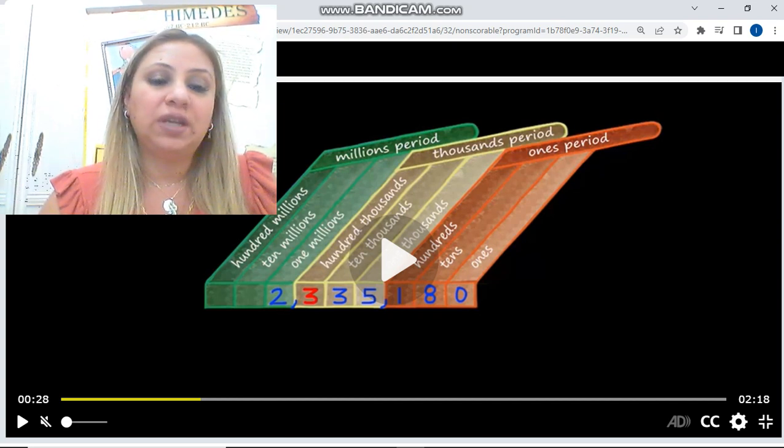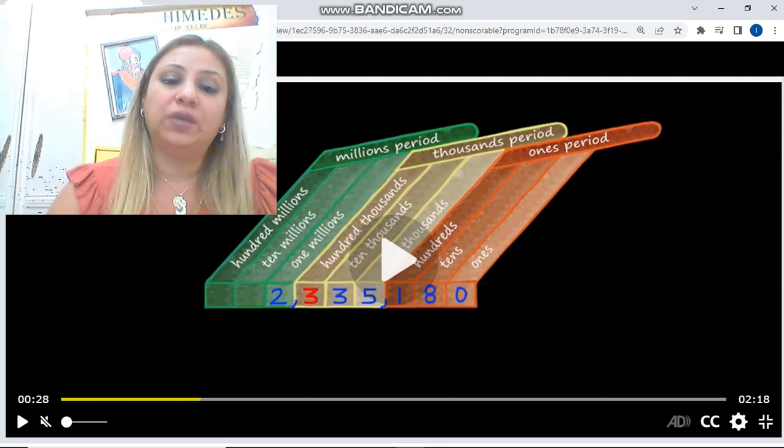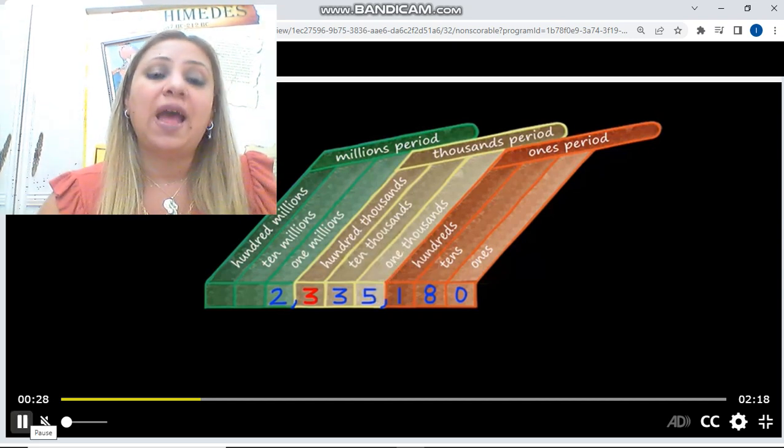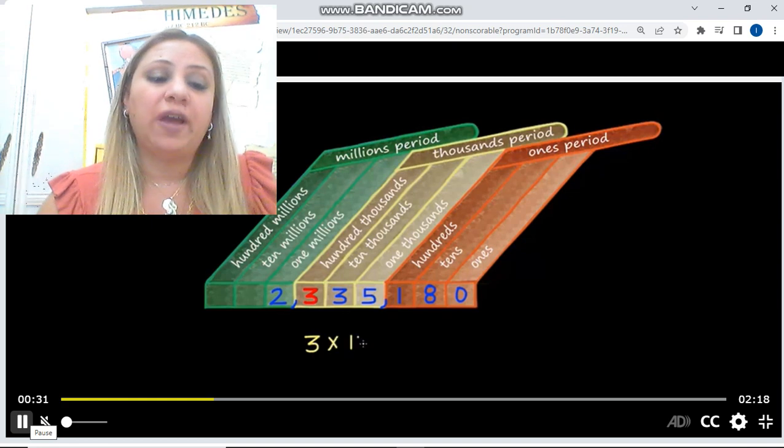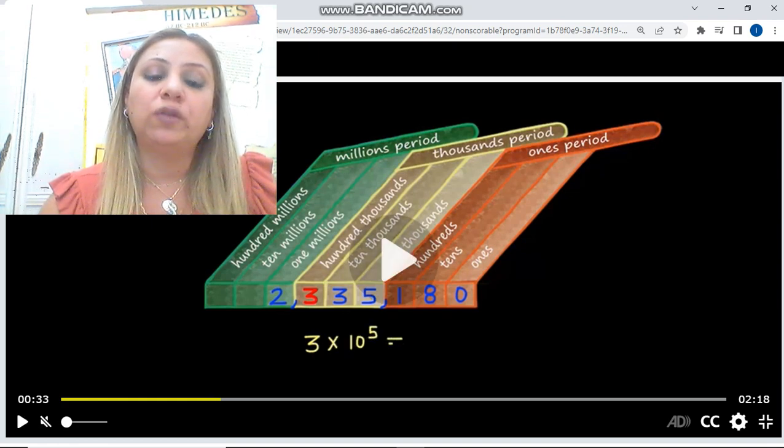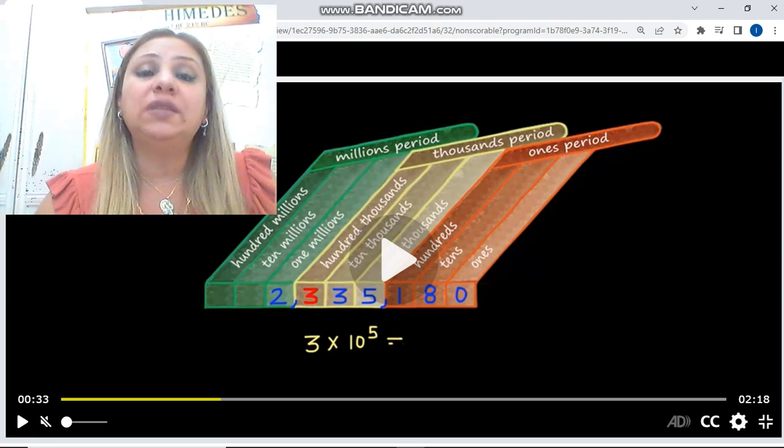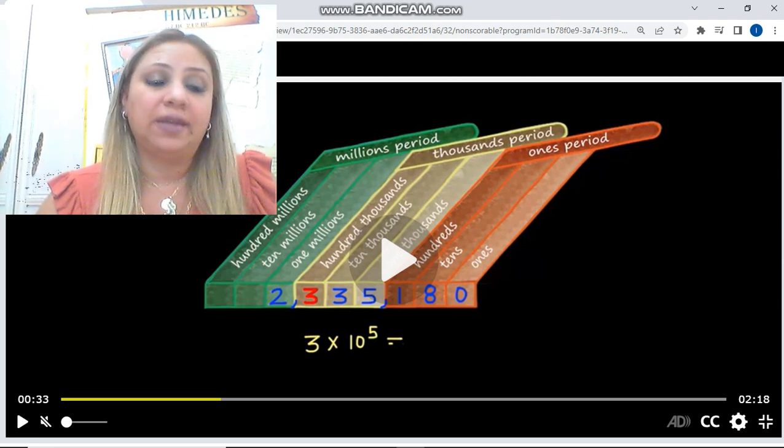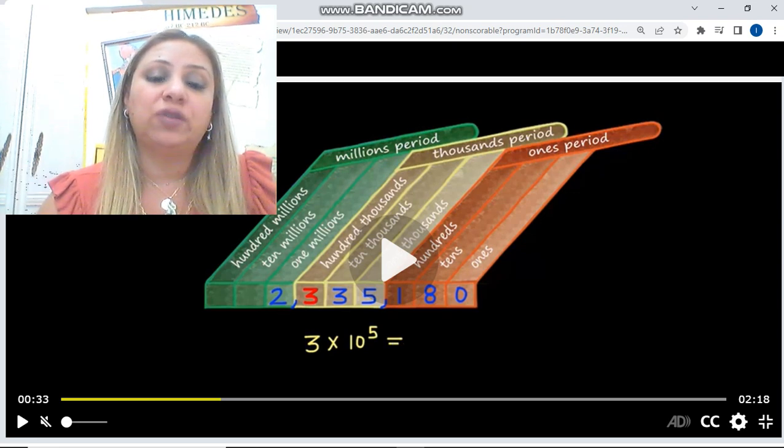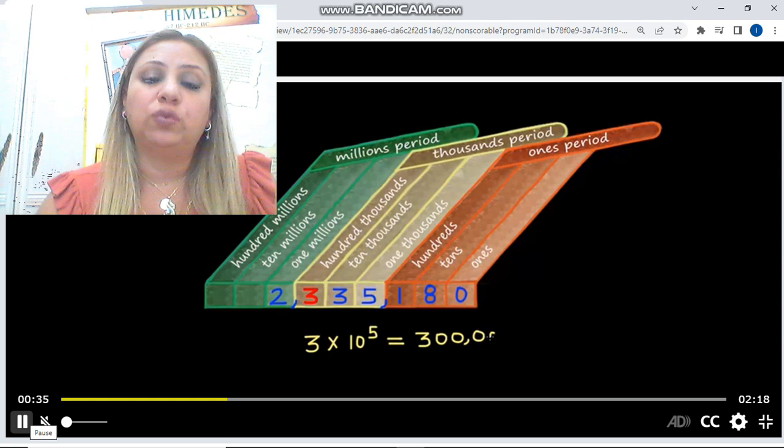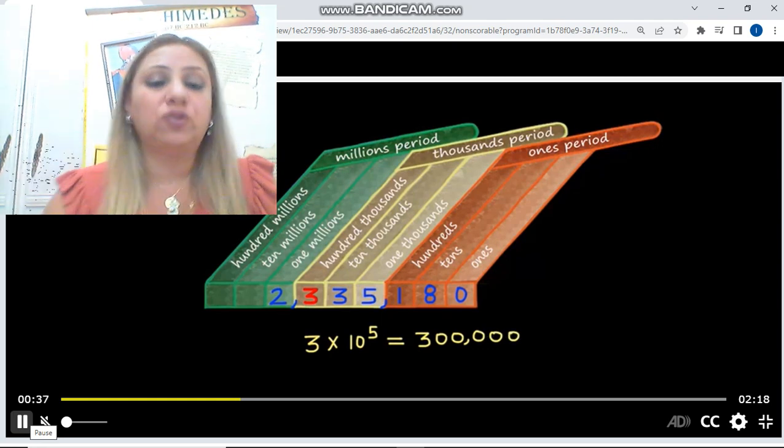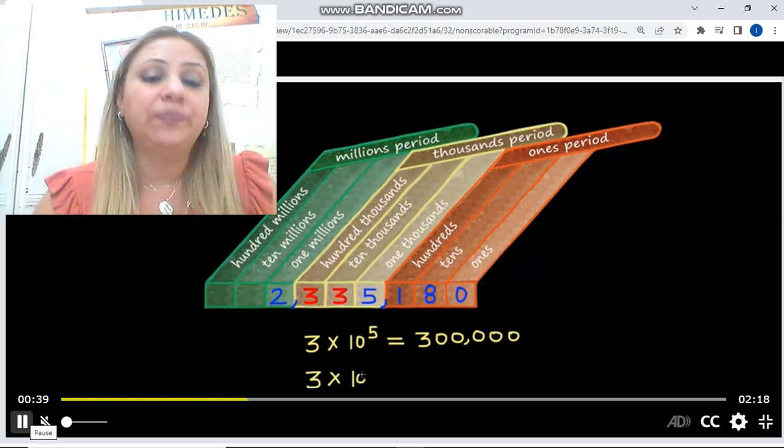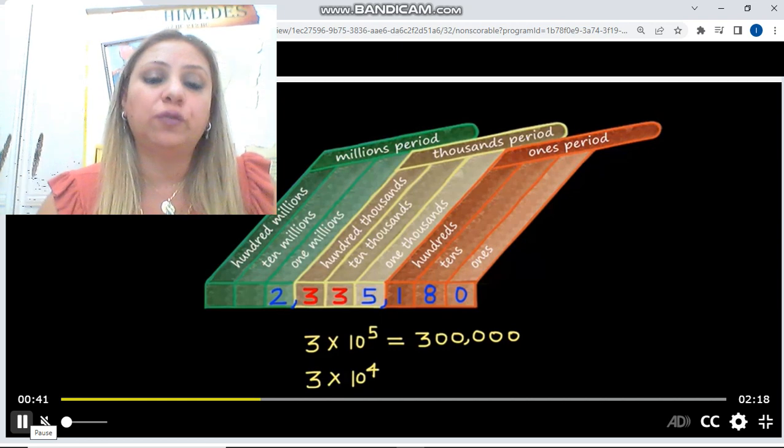As you see here, we have two threes. The first three is in the hundred thousands place, and the second three is in the ten thousands place. If I want to find the value of each one of them, I can write it using the powers of 10. The first three can be written as three times 10 to the fifth power, which equals 300,000. The second three is three times 10 to the fourth power, which gives me 30,000.